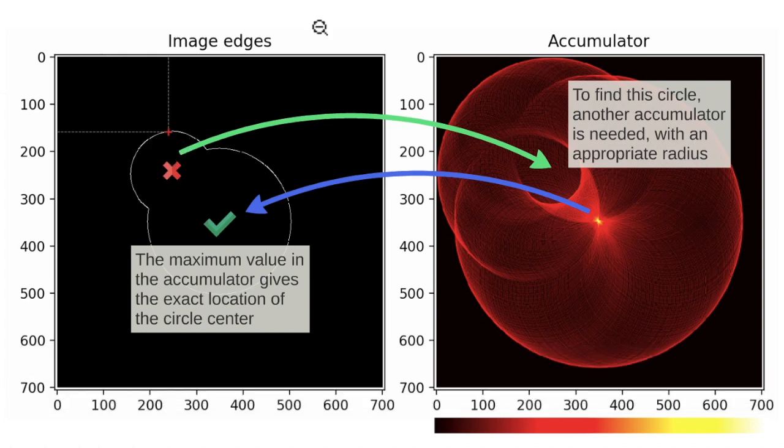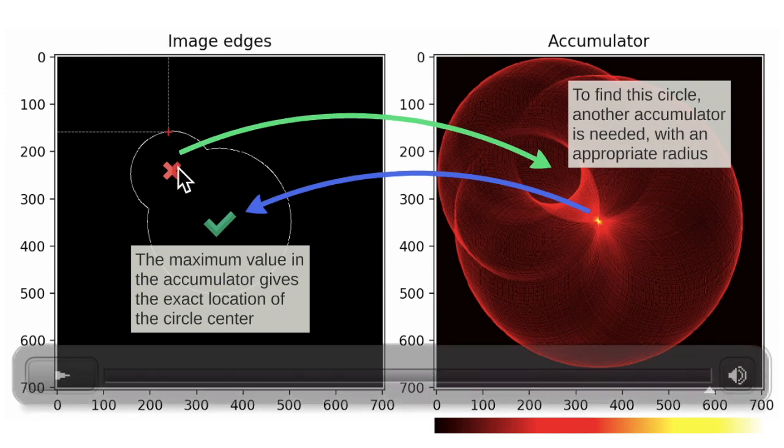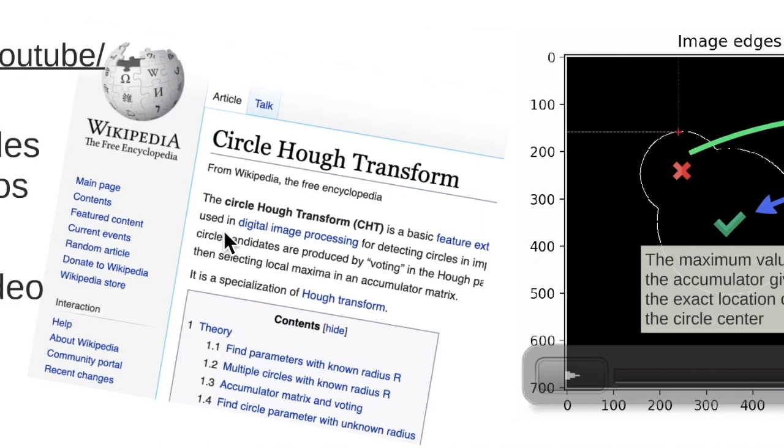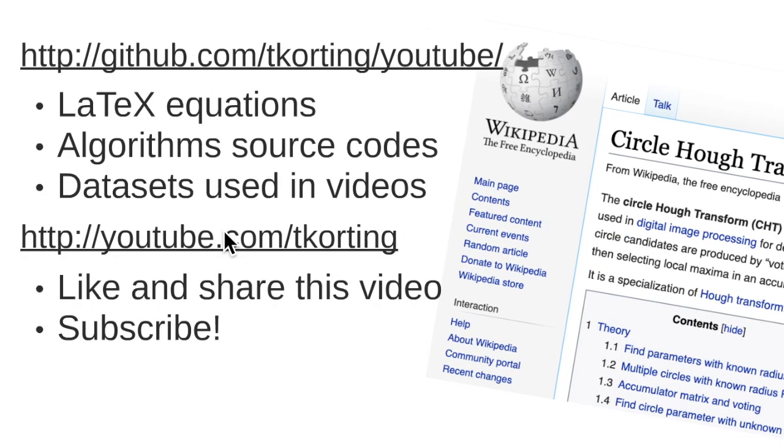In the other example the algorithm would detect this circle center but not detect this circle center. The main reference for my video was the Wikipedia and also my previous video on how the Hough Transform algorithm works. If you want to find LaTeX equations and also the algorithms,